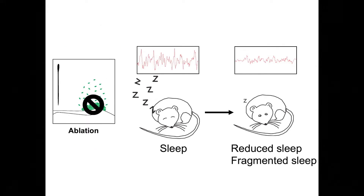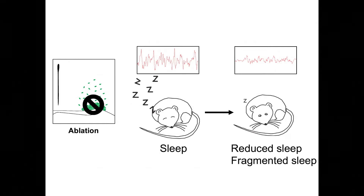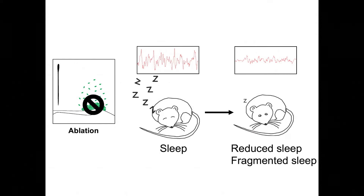On the other hand, if we ablate these AANs, mice reduce total sleep time, they have fragmented sleep, and even when they do sleep, their brain shows diminished slow-wave oscillation.